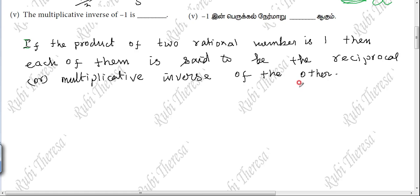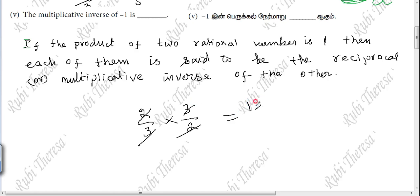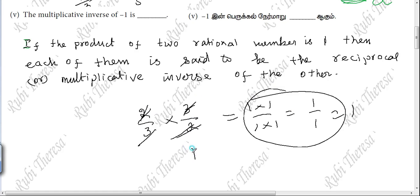If the two rational numbers multiplied give 1, each is the multiplicative inverse of the other. For example, the multiplicative inverse of 2 by 3 is 3 by 2. Multiply: 1 into 1, 1 into 1, 1 by 1 = 1. If the product of two rational numbers is 1, they are multiplicative inverses of each other.